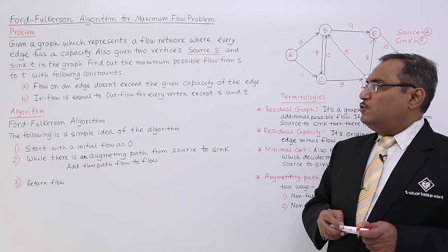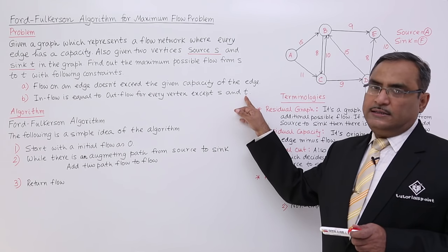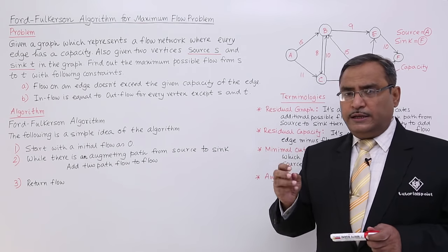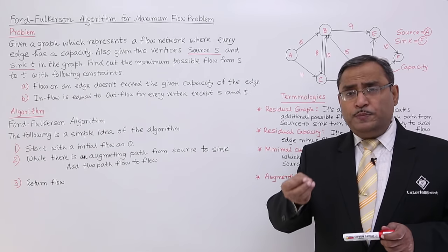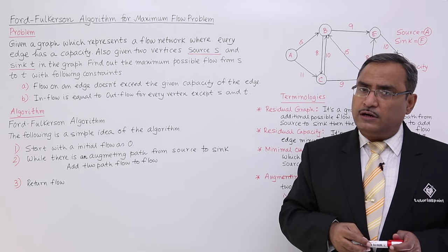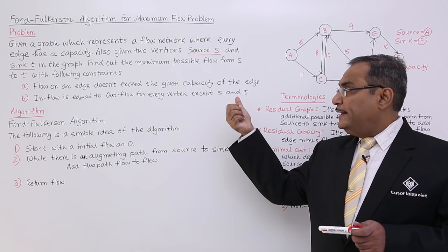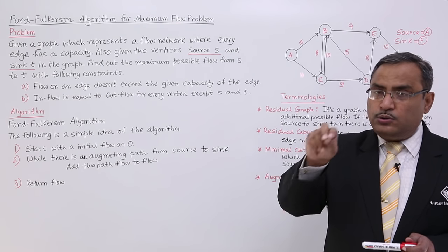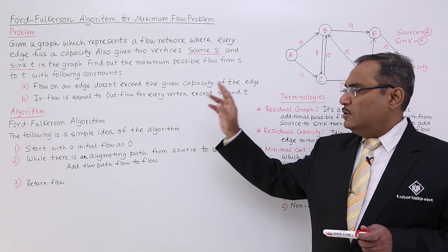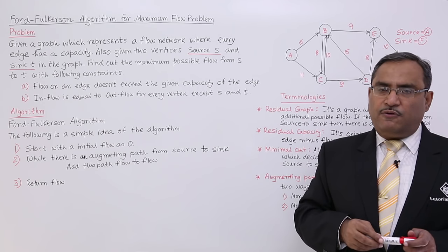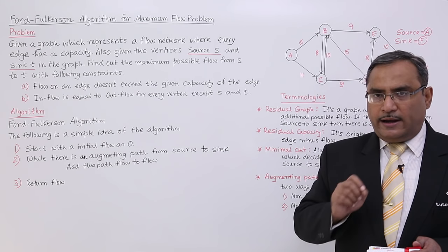Inflow is equal to outflow for every vertex except the source s and the sink t. Whatever flow comes into a vertex should be equal to the flow out from the vertex. But in the case of source, only the flow will come out. In the case of sink t, the flow will go in and it will not come out. Except these two vertices, flow in and flow out must remain the same in all other remaining vertices in this weighted digraph.